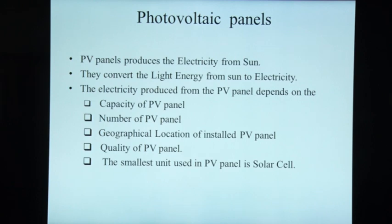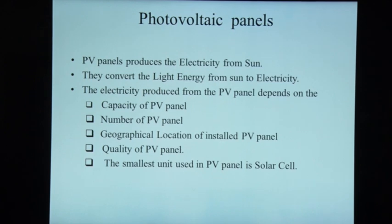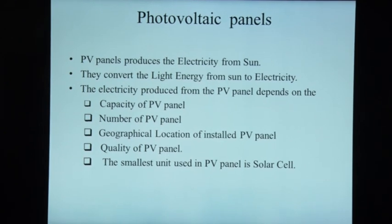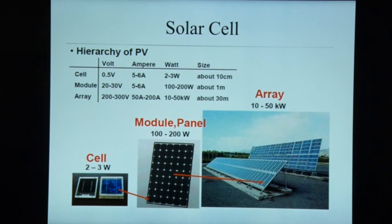PV panels produce electricity from the sun by converting light energy into electricity. The electricity produced depends on panel capacity, number of panels, geographical location, and panel quality (mono-crystalline or poly-crystalline). The smallest unit in a PV panel is a solar cell; cells are connected to form modules, and modules form an array. Generally, a cell produces 2–3 watts, a module produces 100–200 watts, and an array produces 10–50 kilowatts.